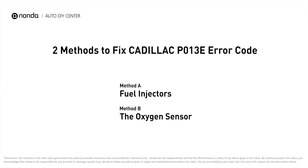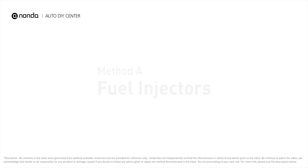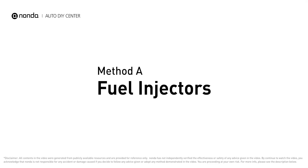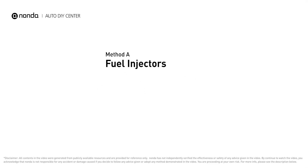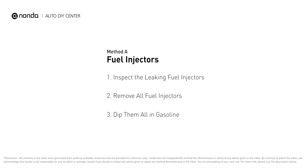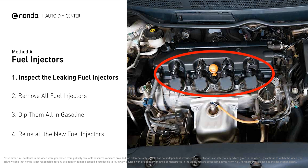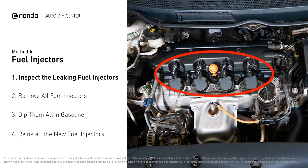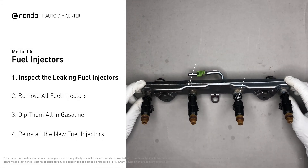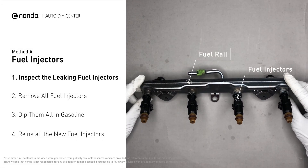Here are two of the most practical solutions to fix Cadillac's P013E error code. Method A: fuel injectors. The fuel injectors are mounted in the intake manifold so that they spray fuel directly at the intake valves. Inspect the leaking fuel injectors on the fuel rail.